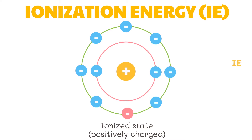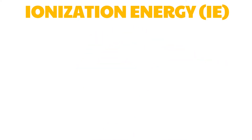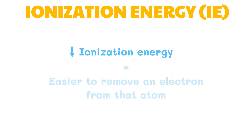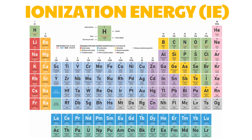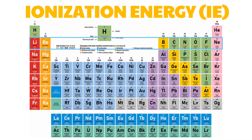Ionization energy is the energy required to pull or remove electrons from an atom. This energy breaks the attraction between the nucleus and the valence electrons. The lower the ionization energy value of an atom, the easier it is to remove an electron from that atom. In period 2 of the periodic table, lithium is located at the leftmost part of the row and is the element having the lowest ionization energy. Thus, it has the highest tendency to lose electrons and become positively charged.